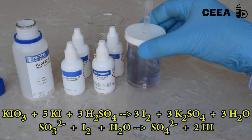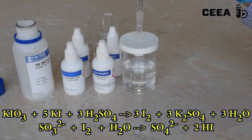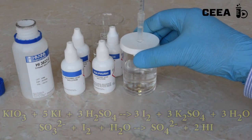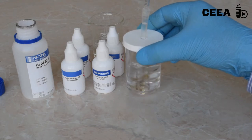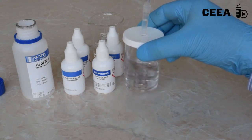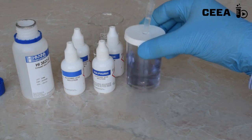The iodate oxidizes the iodide in the presence of sulfuric acid to free iodine. The iodine is reduced by sulfites back to iodide. This is happening until there is sulfite in the solution capable to reduce the iodine.